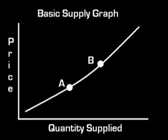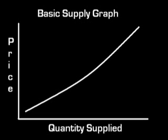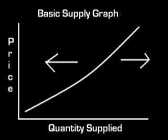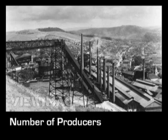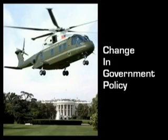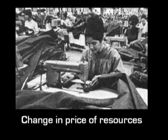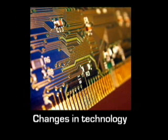This graph illustrates supply. It moves along this line based on changes in price, which affect quantities supplied. The supply curve will only move left or right based on a set of rules known as determinants. The determinants of supply include number of producers, government policy, prices of resources including labor, land, machines, and other factors of production, and technology.